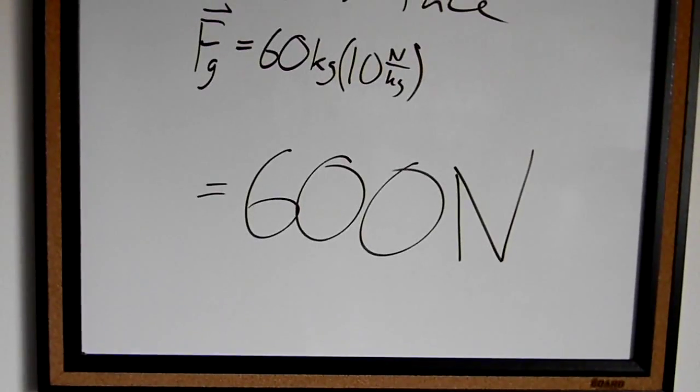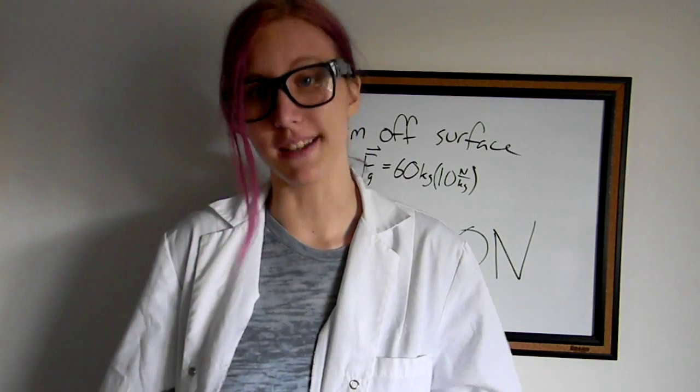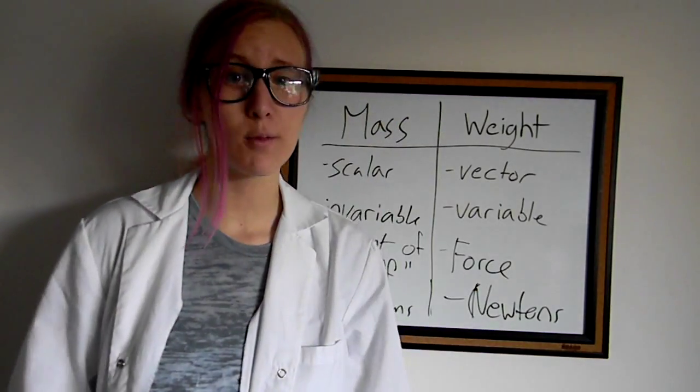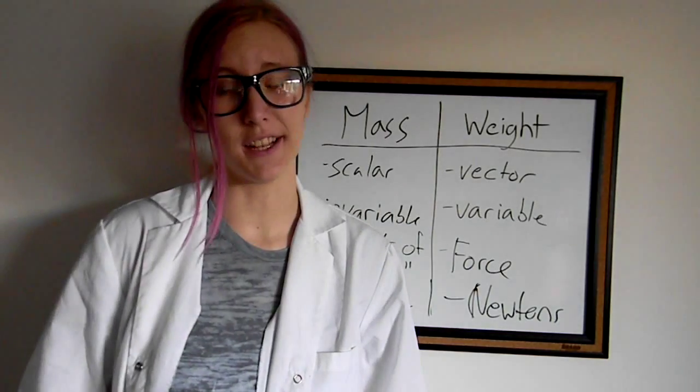If you're 3 kilometers off the surface of yo mama, the gravity up there is 10 newtons per kilogram. So 3 kilometers off the surface of yo mama, your weight is 600 newtons. But your mass off the surface of yo mama is still 60 kilograms — unless you went on a diet or you're radioactive.